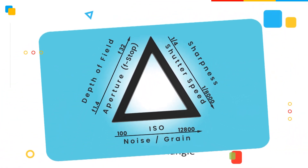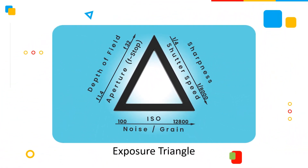Now we have completed the most important part of cinematography. I hope the exposure triangle and image sensor are clear to you. It is time to pick up your camera, start taking images, and make videos. I'm sure you will see a difference in your photography and it will only improve from here. There are a lot of things to learn — I'll see you tomorrow with a new lesson. Till then, good luck and have fun!